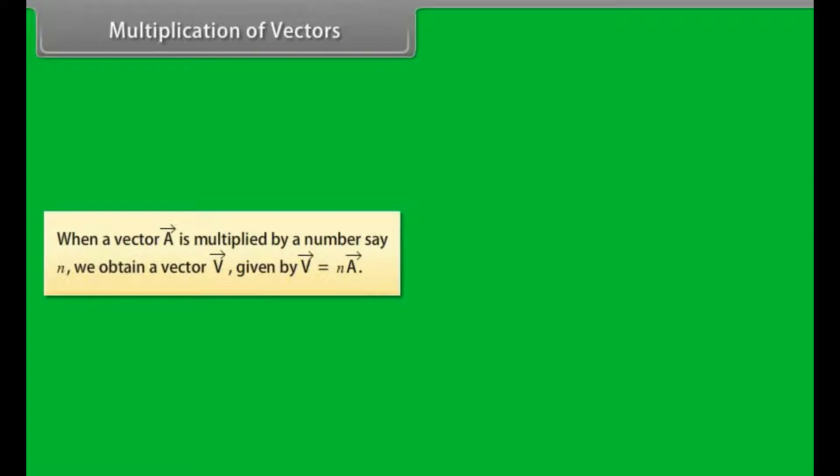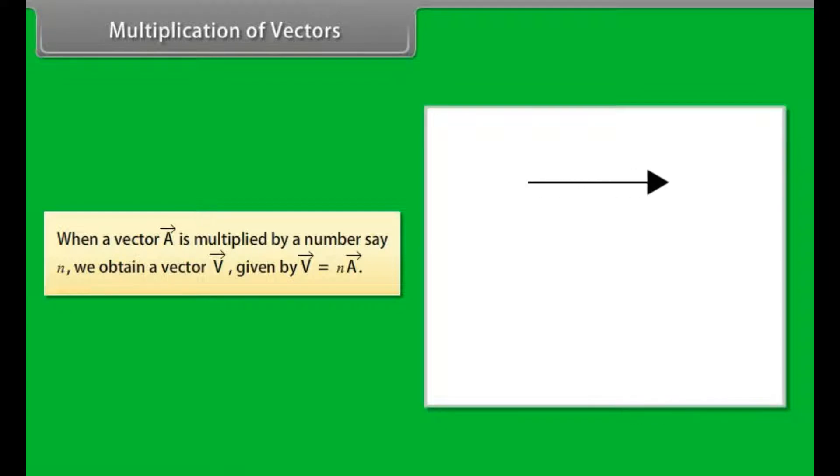Multiplication of vectors. When a vector a is multiplied by a number say n, we obtain a vector v given by V vector = n × a vector. Let's take an example. If a vector a is multiplied by 2, the resultant vector 2a is in the same direction as a vector and has a magnitude twice of a vector.